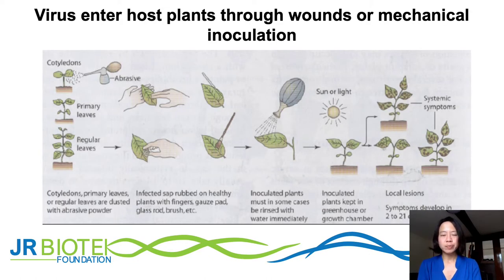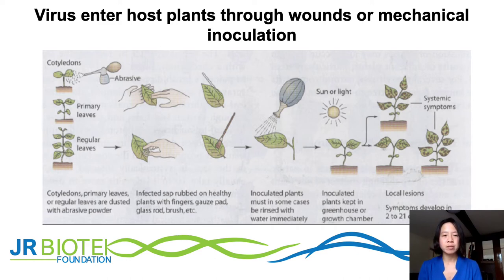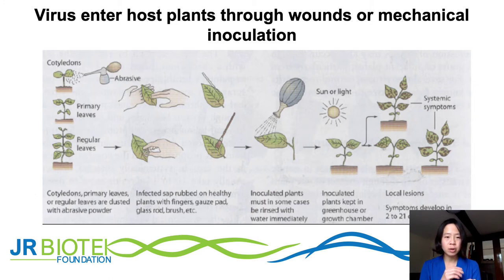How does a virus enter the host plant? A virus cannot facilitate its own entry — it needs to be facilitated by insects, through wounds, or by mechanical inoculation. This diagram shows how one can inoculate infectious material onto a healthy plant: place an abrasive compound such as sand or grit onto the surface of the leaf, crush an infected leaf using a mortar and pestle, then rub the infected leaf sap onto the leaf.